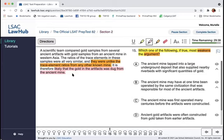And the chain of reasoning here is that they've eliminated the possibility that the gold is from any other known mine. But does that mean that the gold was dug from this particular ancient mine? Or is there some other way that they could have obtained that gold? Excuse the yawn. Okay, so answer choice A, the ancient mine tapped into a large underground deposit that also supplied nearby riverbeds with significant quantities of gold.